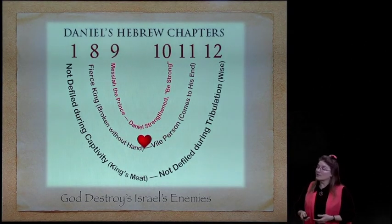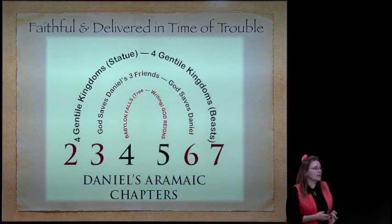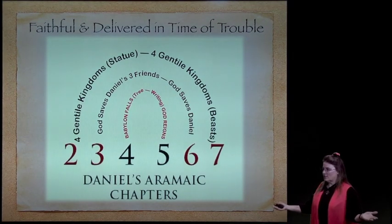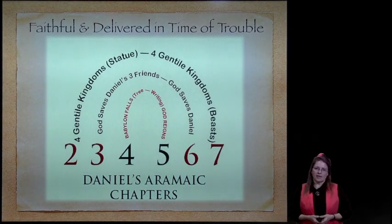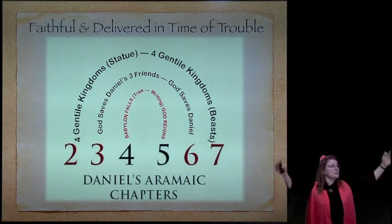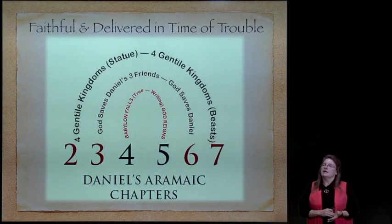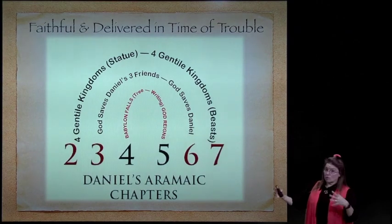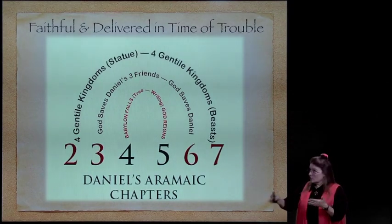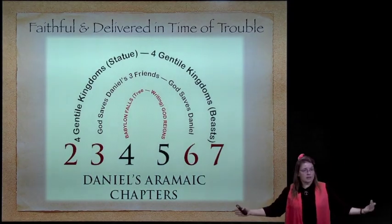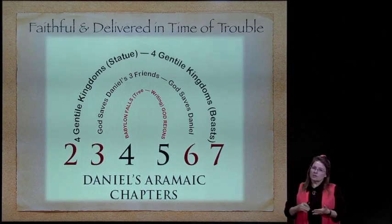For a minute let's go back and look at the other chapters. Daniel's chapters 2–7 were written originally in Aramaic—the language of the nations in Daniel's time. These are the chapters that present a prophecy to the Gentiles in the end time. In chapters 2 and 7—those are always your title chapters, the ones on the two extremes that frame the prophecy—we see King Nebuchadnezzar's dream of the statue and the big stone that rolls and crushes it, and in Daniel 7, a vision of the four Gentile kingdoms.